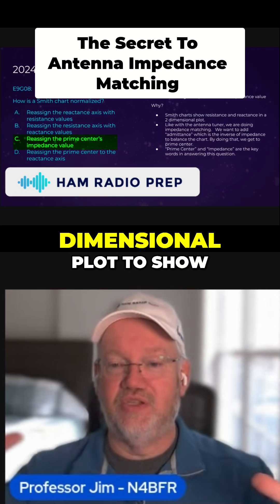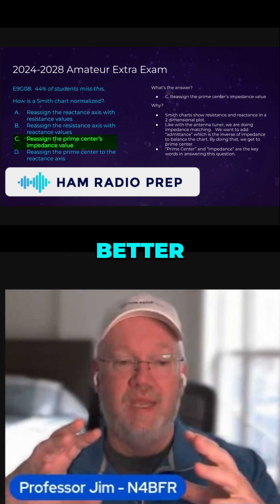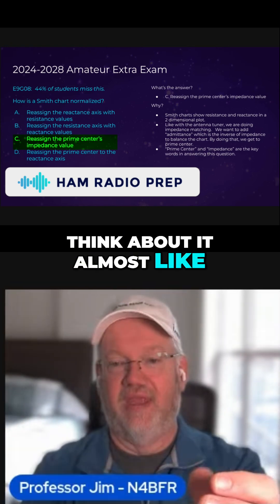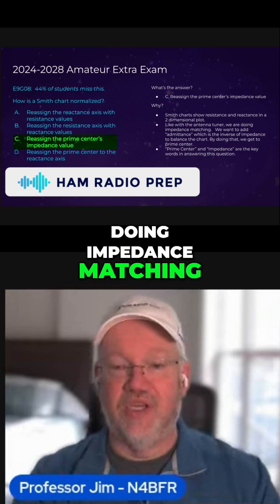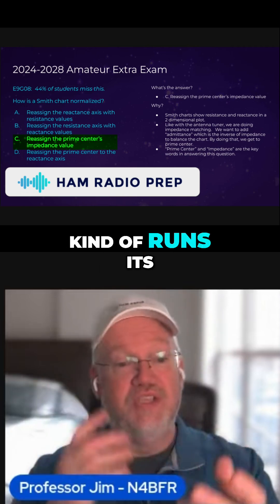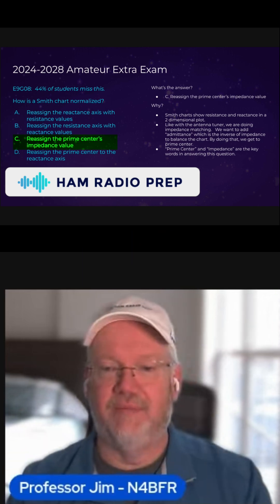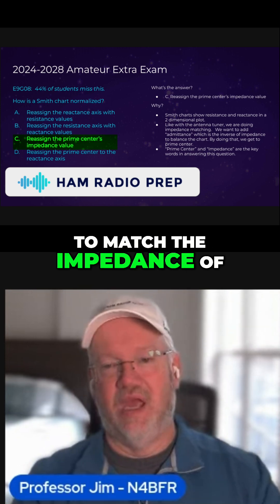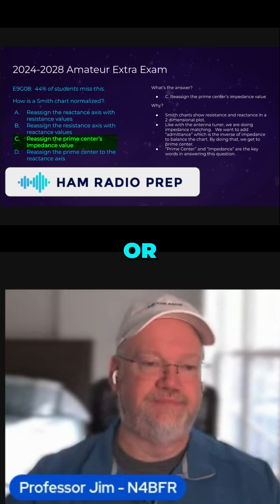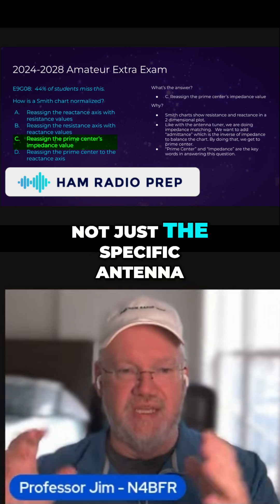A Smith chart is a two-dimensional plot used to show resistance and reactance, helping you improve your SWR and impedance to your antenna. Think of it almost like a tool for doing impedance matching, like an antenna tuner — in fact, an antenna tuner could be argued to run its own Smith chart when tuning to find the sweet spot. More correctly, Smith charts show the whole feed line and antenna, not just the specific antenna.